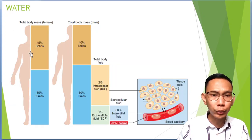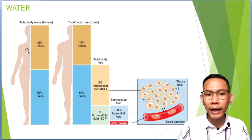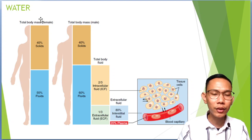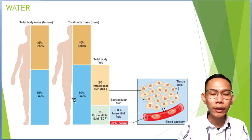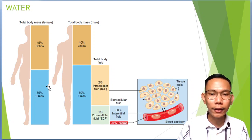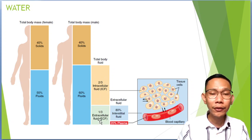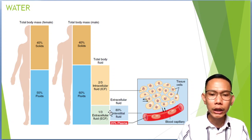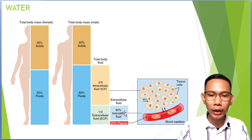The interstitial fluid volume is around 80% of your extracellular fluid, while your plasma volume is approximately 20% of your extracellular fluid. We have this diagram to compare the body water content of a male and a female patient. A female patient has around 45% solid and 55% fluid, while a male has 40% solid and 60% fluid — because males have more muscle tissue compared to females who have more fat content. Total body fluid: two-thirds is from your intracellular fluid, and one-third is from your extracellular fluid. Your plasma is within your blood capillaries — around 80% interstitial fluid and 20% plasma.